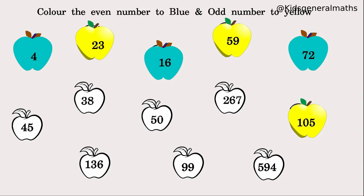Next, 267: it ends with 7, which is an odd number, so 267 is an odd number — colour it yellow. Next, 50: it ends with 0, which is an even number, so 50 is an even number — colour it blue.